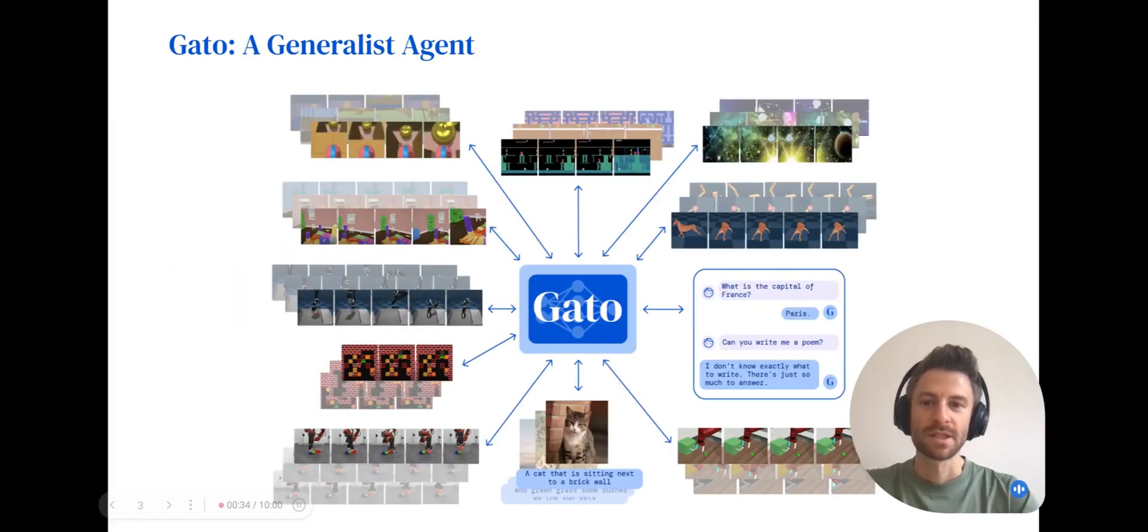This image shows a succinct overview of the generalist agent, also known as Gato. Gato is a multimodal, multitasked, multi-embodiment generalist policy. The same network with the same weights can play Atari, caption images, chat, stack blocks with a real robot arm, and much more, deciding based on its context whether it has the text, joint torques, button presses, or other tokens. Here, we visualize some of the data used to train the agent, and we will go into more detail on the training data in the data section.